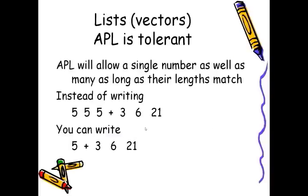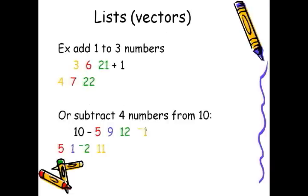APL is very tolerant when it comes to applying a function to a list or to a vector. If all the numbers are the same, you can simplify that by putting only one number. As an example there, you can see that 5 plus 5, 5 plus 3, 6, 21 can be simplified by simply using 5 plus 3, 6 and 21. Here's another example. We want to add the number 1 to three numbers. So we say 3, 6 and 21 plus 1. And APL does it for us.